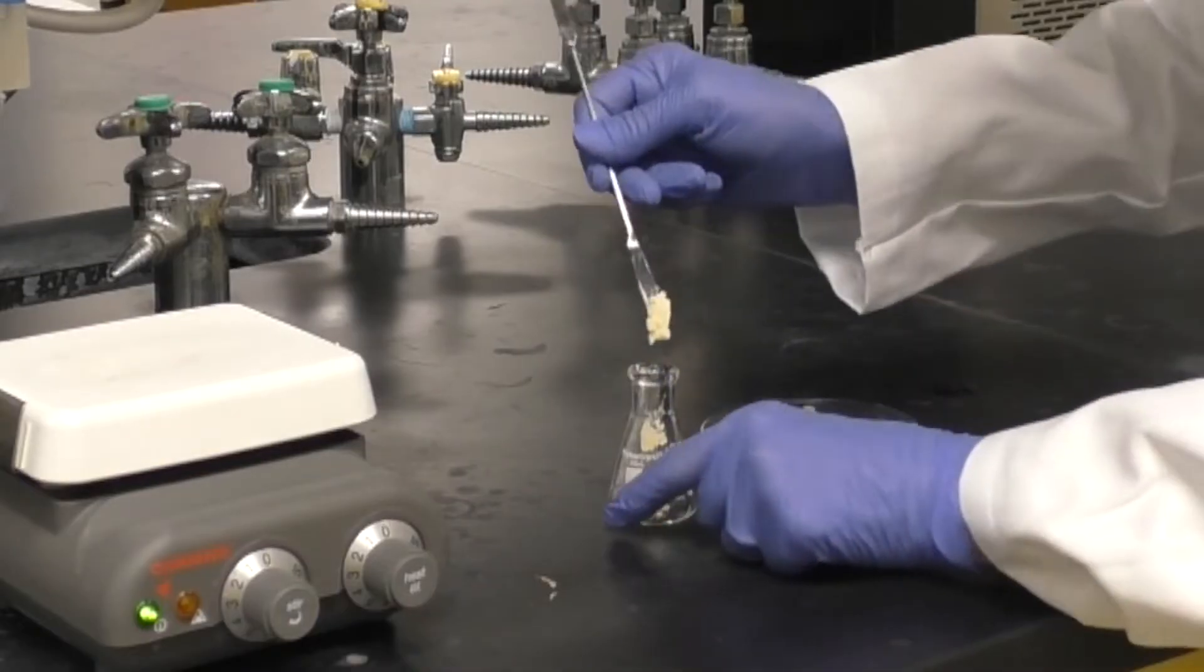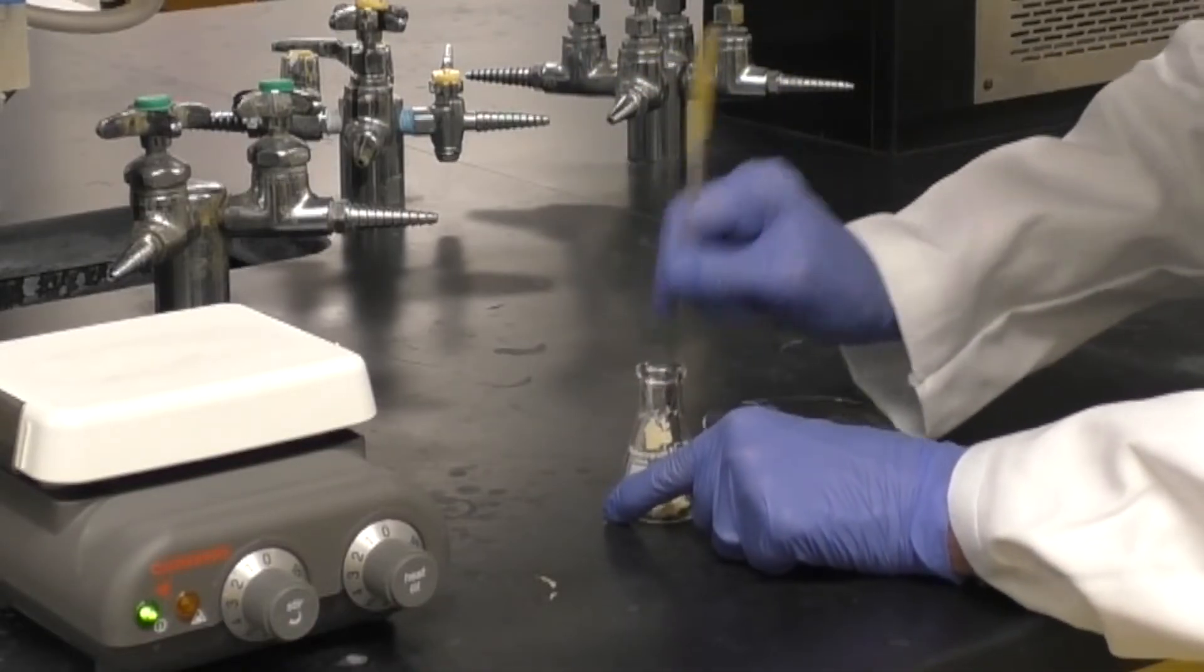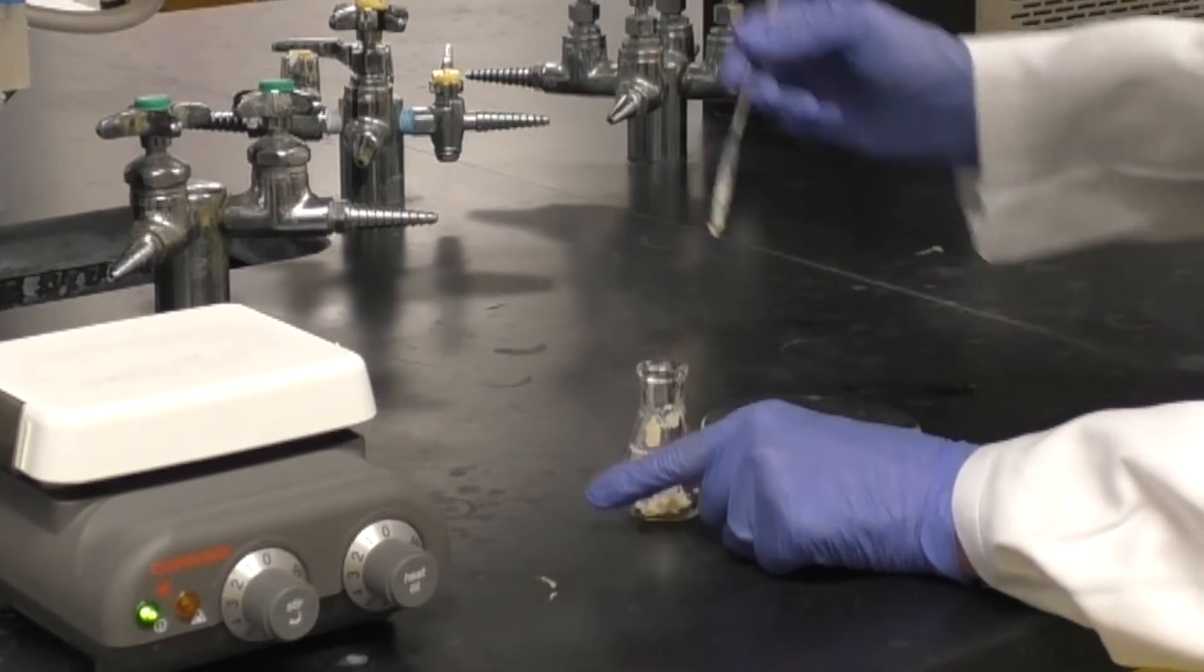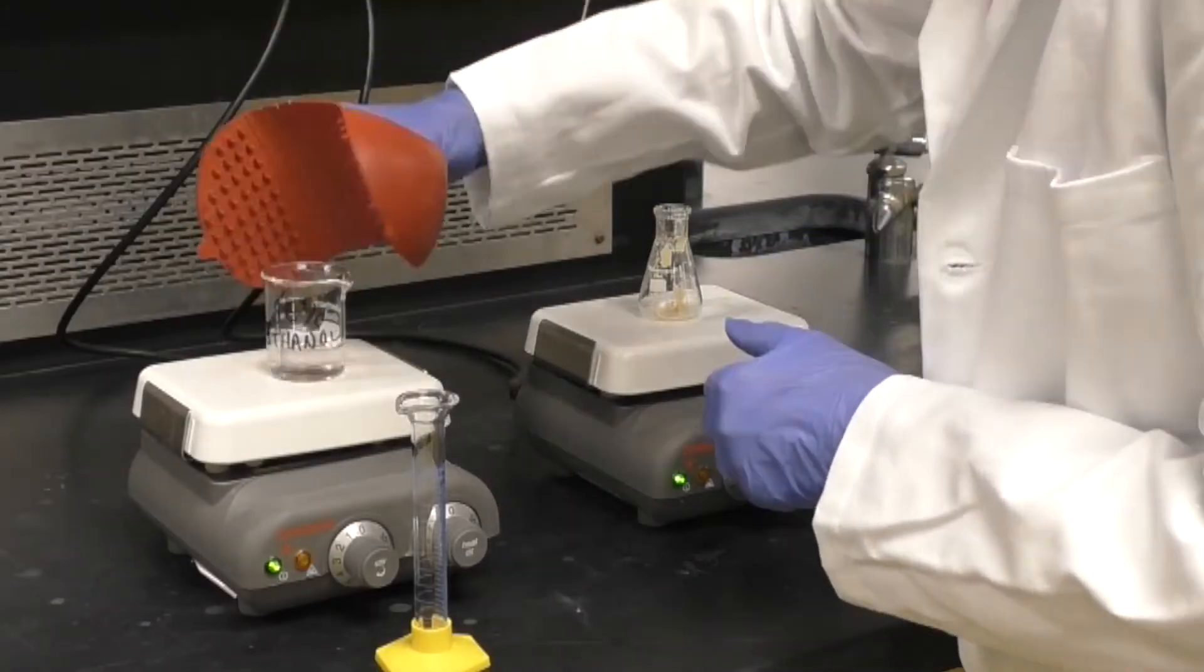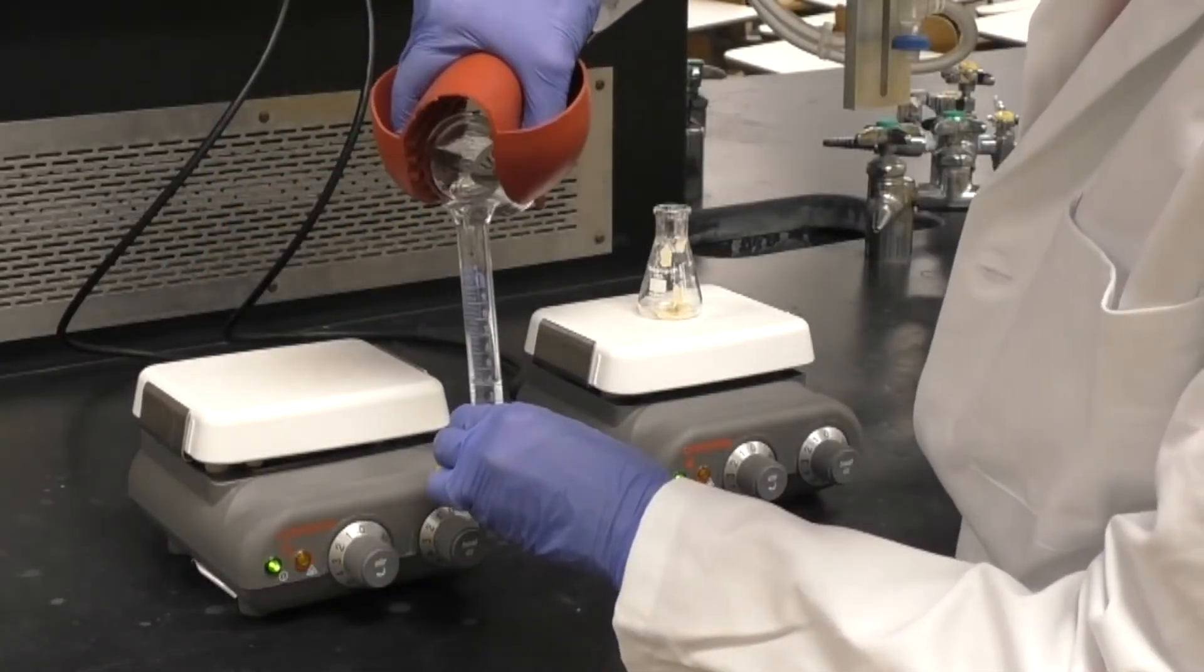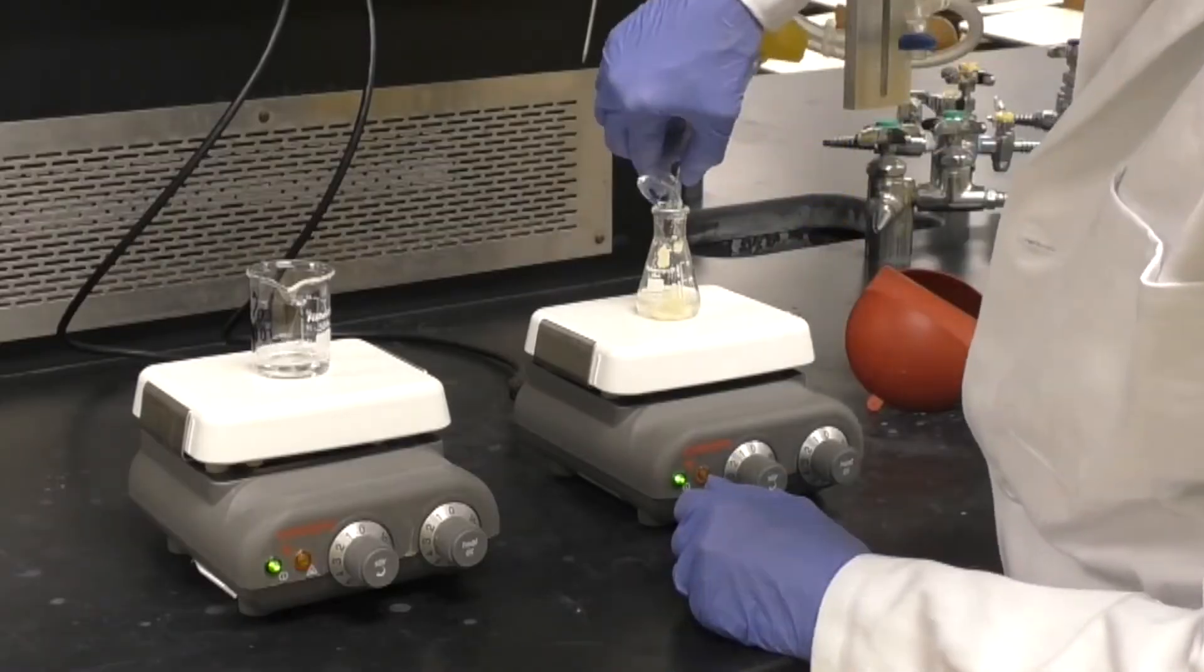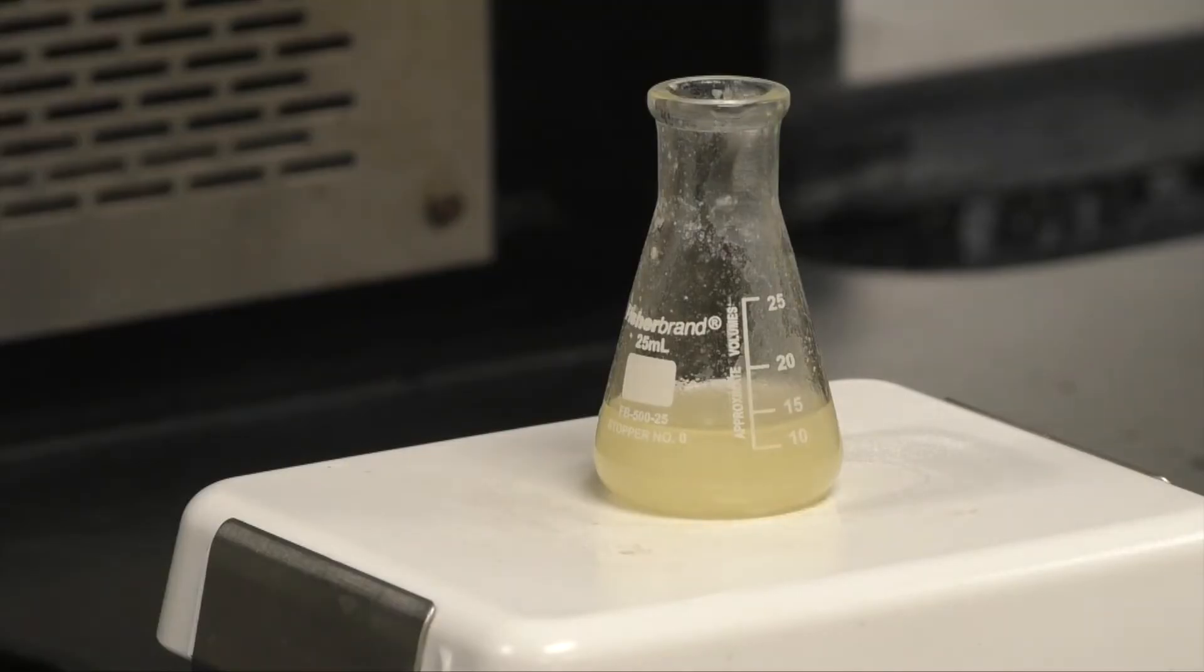To recrystallize the crude product, transfer it to a 25 milliliter Erlenmeyer flask. Add 10 milliliters of the boiling ethanol and stir. Add up to 5 more milliliters of ethanol, but only add the minimum amount needed to dissolve the product.